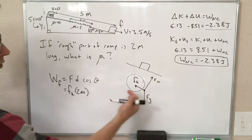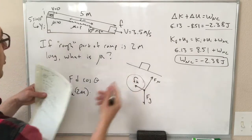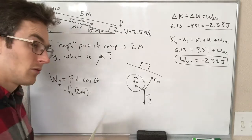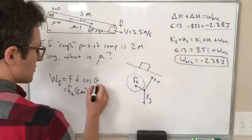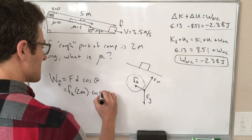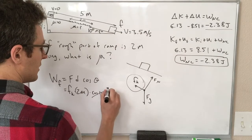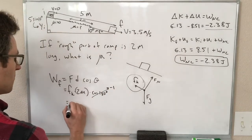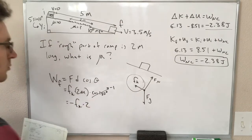And theta here, if our friction is up the ramp, but we're moving down the ramp, that's 180 degrees. Just as promised, this should always be cosine of 180 degrees. Cosine of 180 degrees is minus 1, so this is equal to minus force of friction times 2 meters.